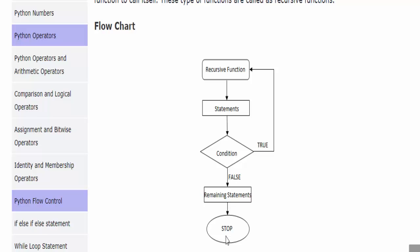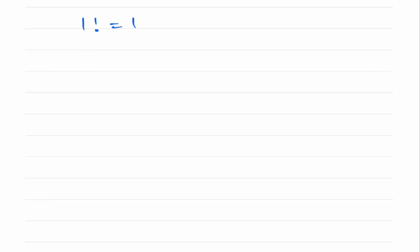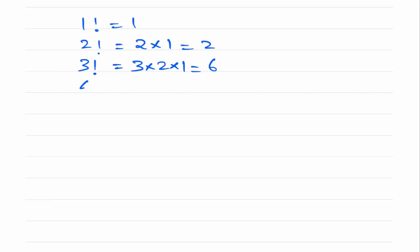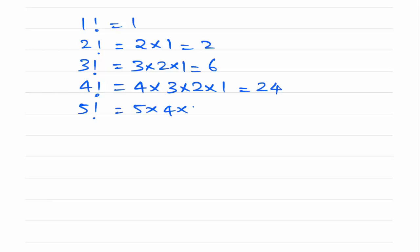We are going to create a function for finding the factorial of a number and use it as a recursion function. What is the meaning of factorial of a number? The logic is: 1 factorial equals 1, 2 factorial equals 2 into 1, 3 factorial equals 3 into 2 into 1 which is 6, 4 factorial equals 4 into 3 into 2 into 1 which is 24, 5 factorial equals 5 into 4 into 3 into 2 into 1 which is 120. This is how factorial works.